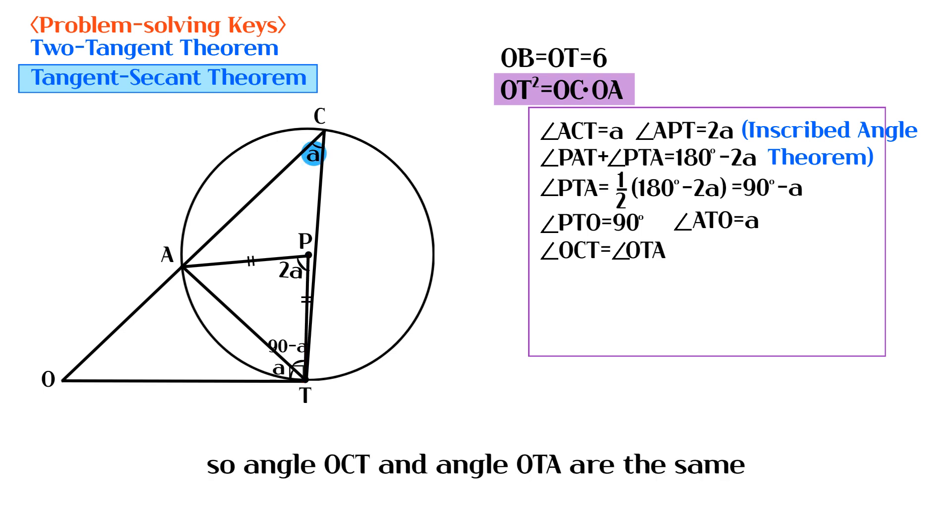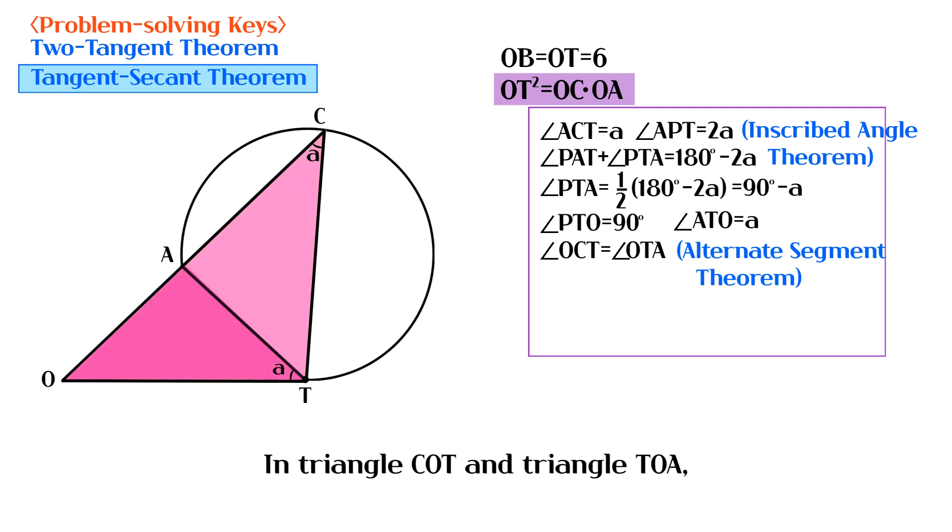So angle OCT and angle OTA are the same. In triangle COT and triangle TOA, angle OCT is equal to angle OTA.